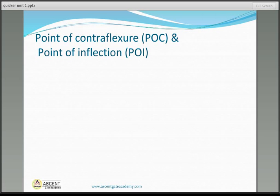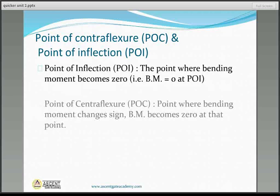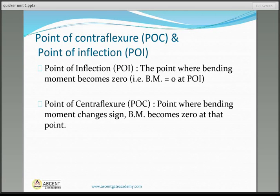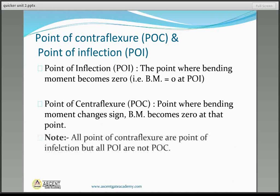A beam with two overhangs is much better than a beam with one overhang from a design standpoint. The point of inflection is where bending moment becomes zero — every such point is a point of inflection. The point of contraflexure is where bending moment changes sign; while changing sign, bending moment becomes zero. All points of contraflexure are points of inflection, but not all points of inflection are points of contraflexure.